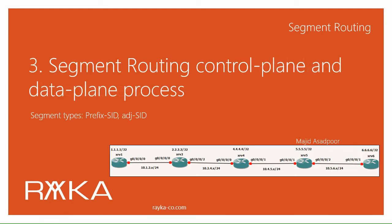In this section I want to talk about the segment routing mechanism - in other words, the control plane and data plane process in segment routing. As you remember from the first video on segment routing, the segment routing network is a network where the traffic route is inserted into the packet itself.